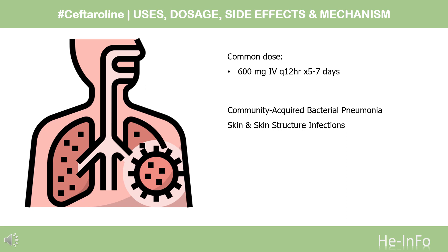Dose: The dose of this medicine will be different for different patients. Community-acquired bacterial pneumonia (CABP): 600 mg Q12H for 5–7 days. Skin structure infections: indicated for acute bacterial skin and skin structure infections (ABSSSI), including MRSA, 600 mg Q12H for 5–14 days.